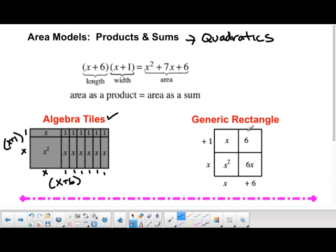We can also do it generically, where we have x plus six along the side over here, and x plus one along this side. You'll notice here, instead of an x squared tile, we just write x squared. And instead of the six x's, we have six x. Up here, we have one x, instead of what you see over here. And then instead of the six ones, we have a six. So that would be what we call a generic rectangle, which works as well.